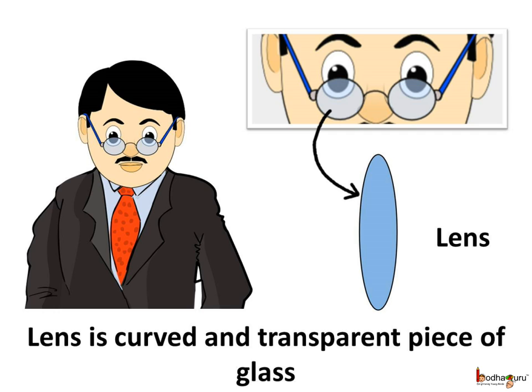Now, what is a lens? A lens is generally a curved and transparent polished piece of glass or any other transparent material.